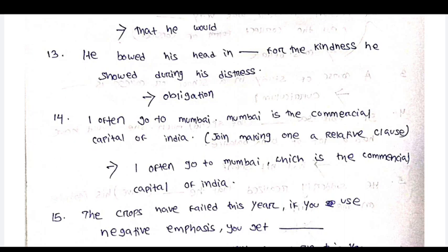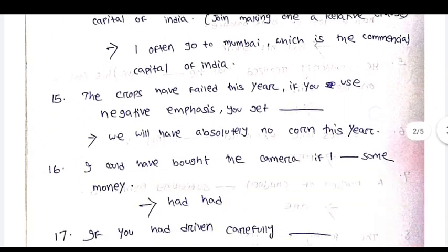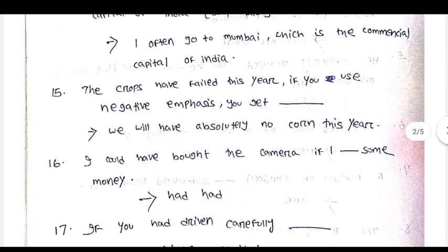I often go to Mumbai. Mumbai is the commercial capital of India. Joining — make one using a relative clause. Answer: I often go to Mumbai, which is the commercial capital of India.